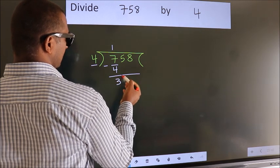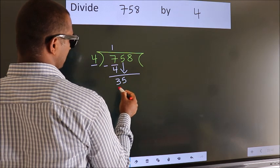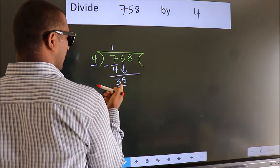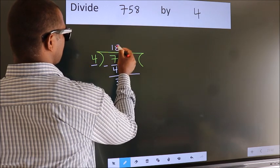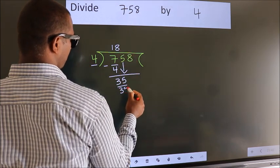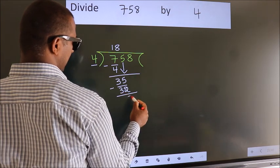After this, bring down the beside number, so 5 down, so 35. A number close to 35 in the 4 table is 4 times 8 is 32. Now we subtract, we get 3.